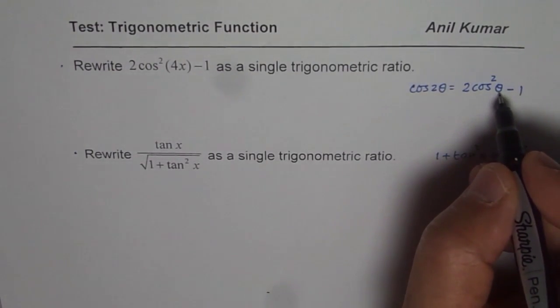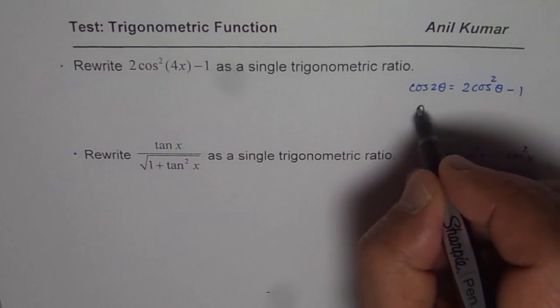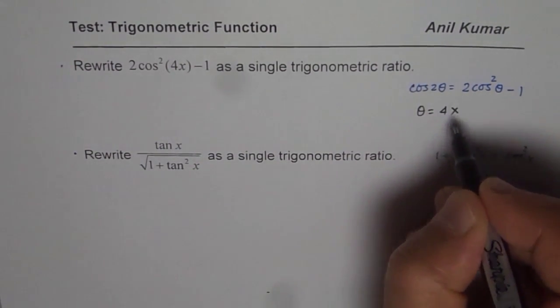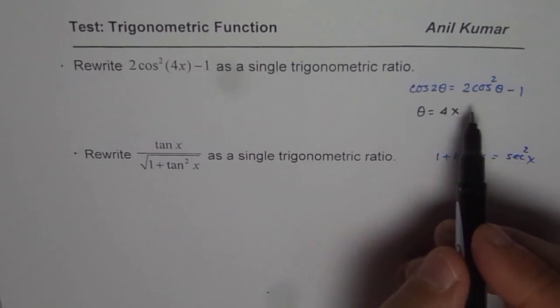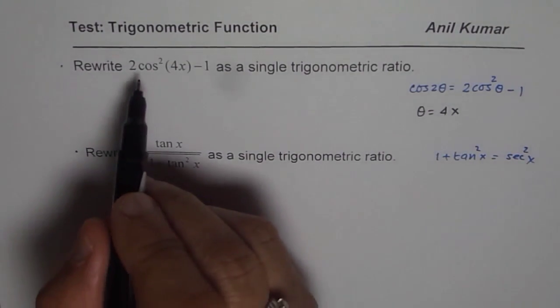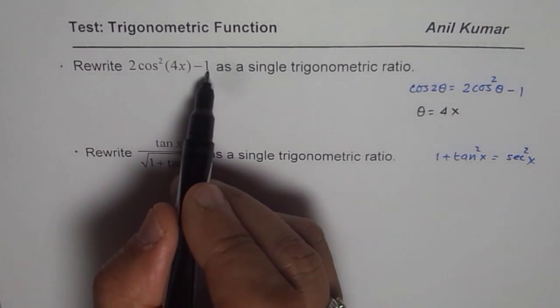So in our case, θ is 4x. Now, if θ is 4x, then I get 2cos²(4x) - 1.